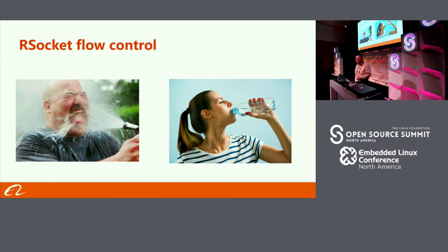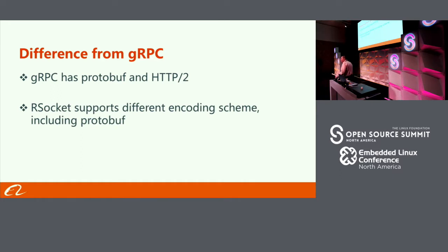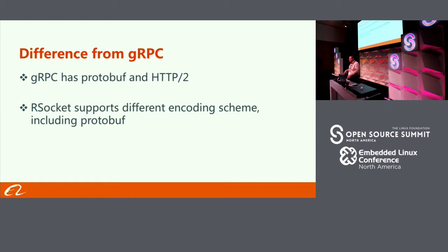Now, comparisons with other technologies. The most common question is the difference from gRPC, which is very popular. gRPC has two parts: an RPC part and a protocol part. RSocket is a protocol — it is not an RPC layer. It actually works with protobuf, so if you've already generated your proto files, you can port them over without regenerating. It also supports other encoding mechanisms.